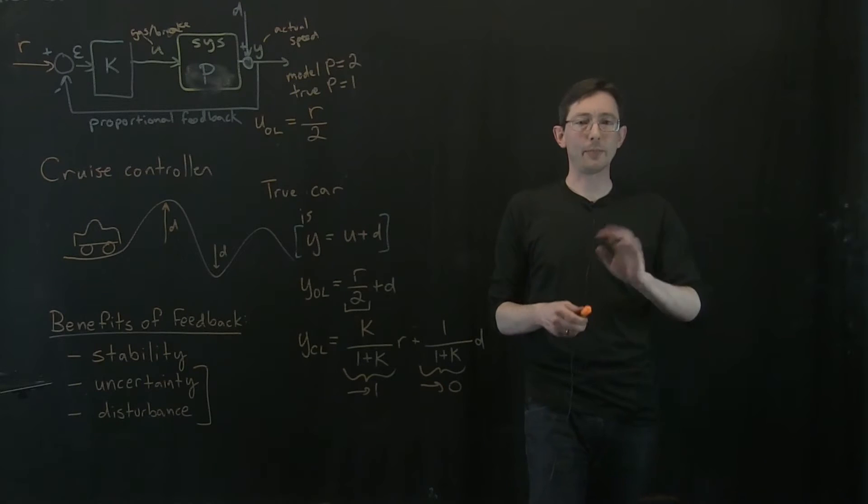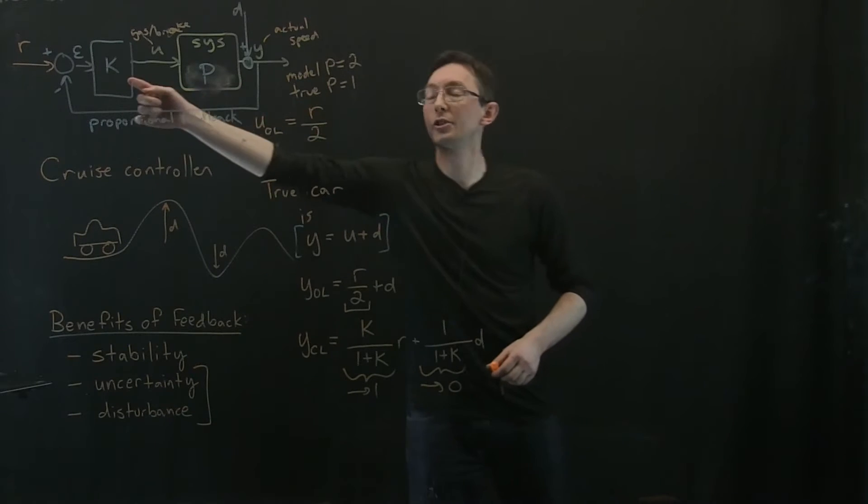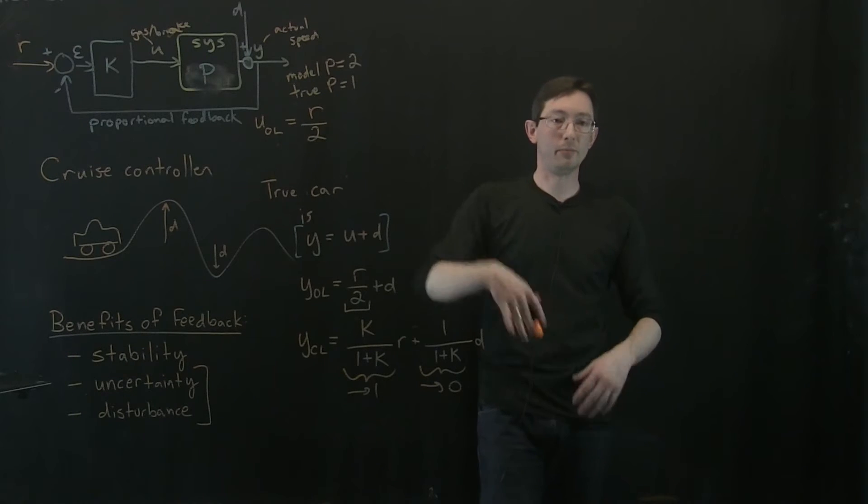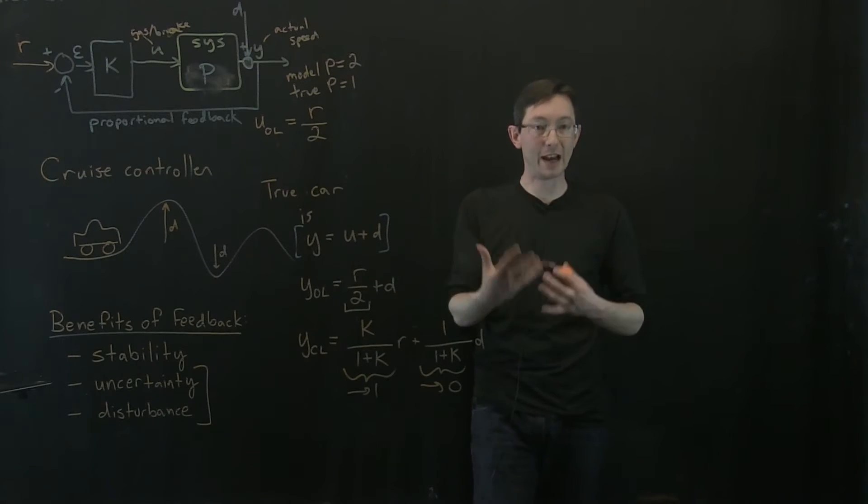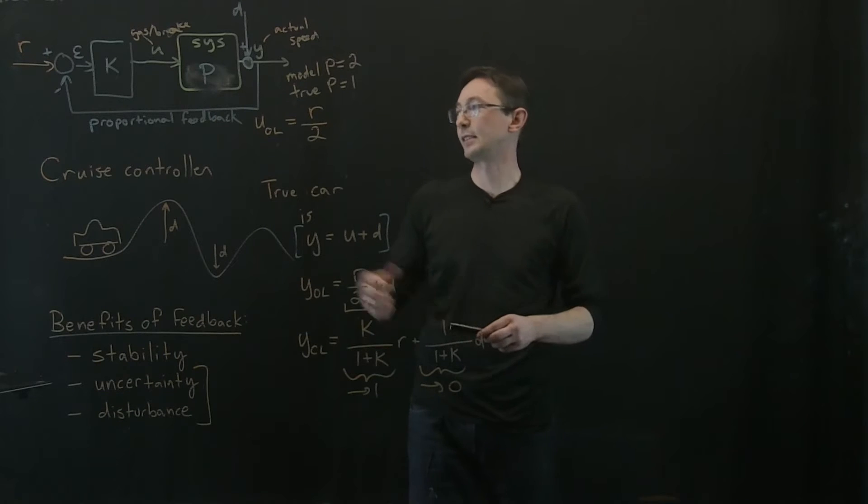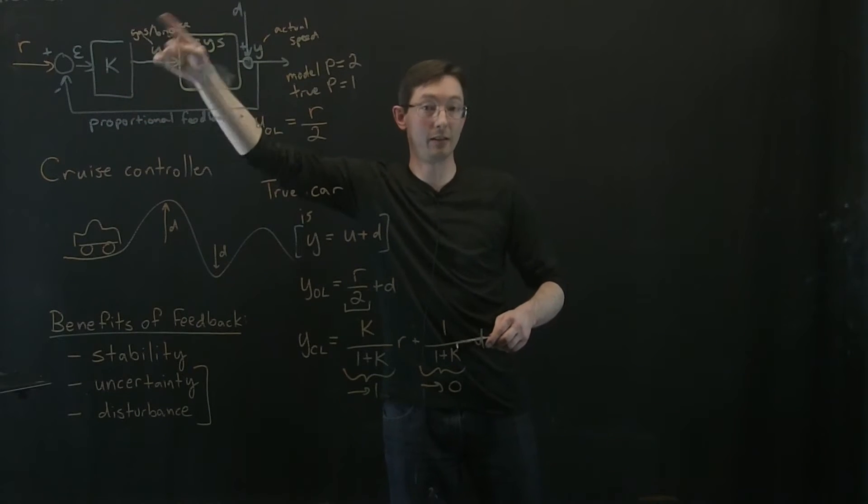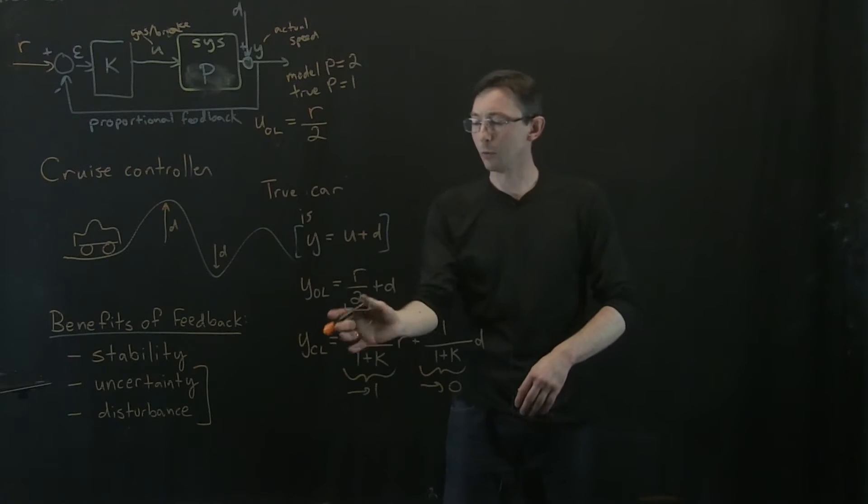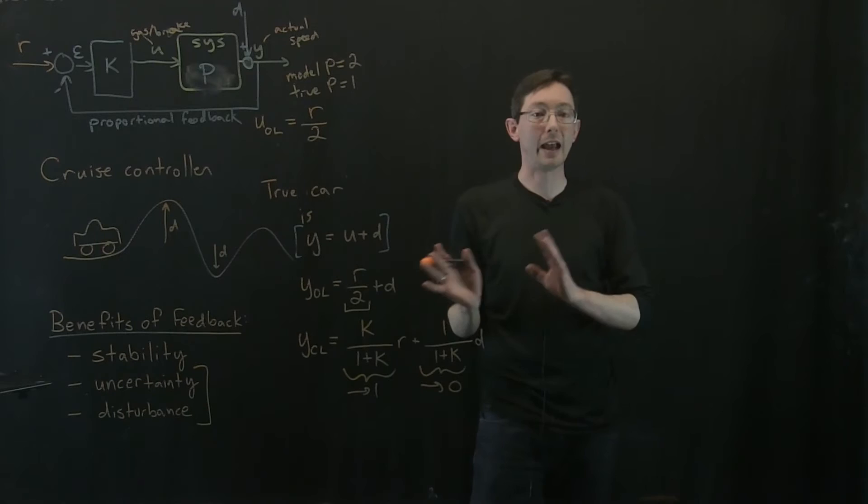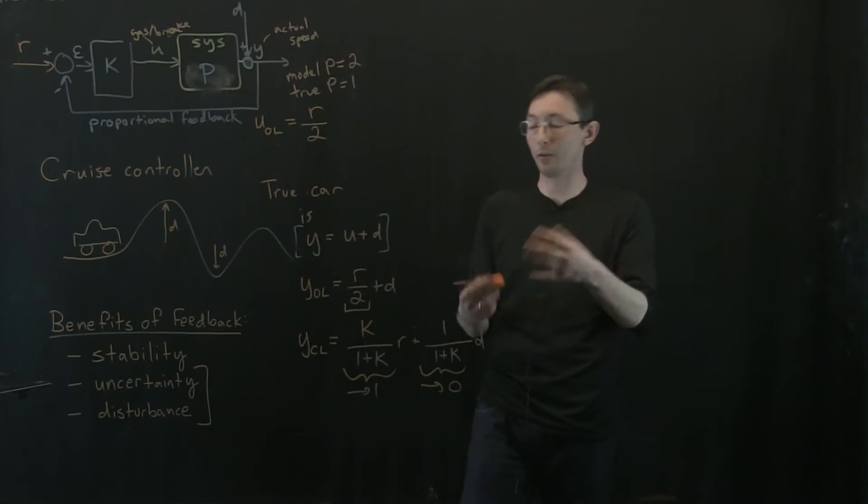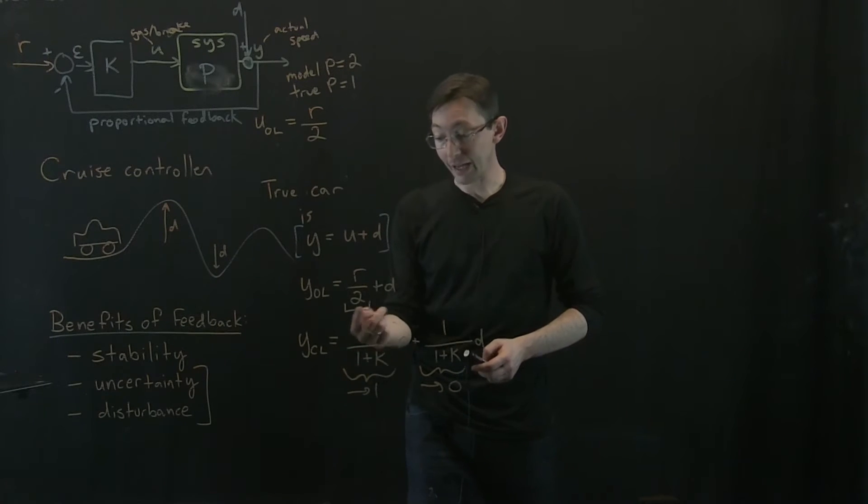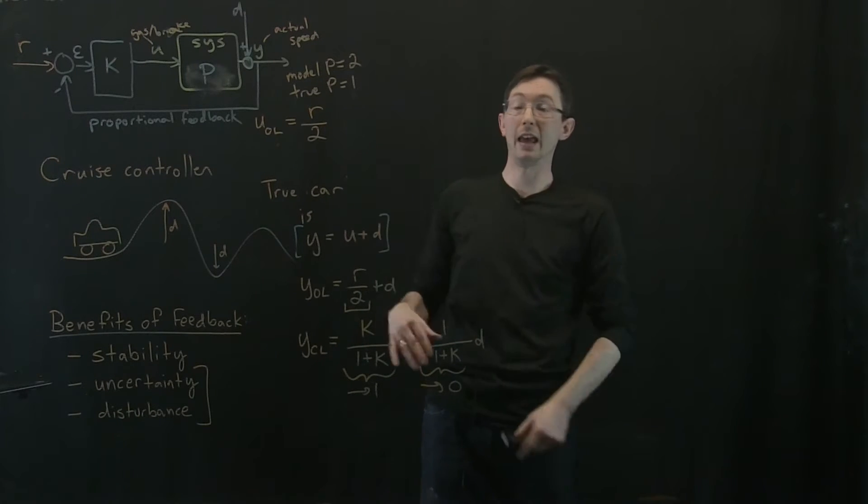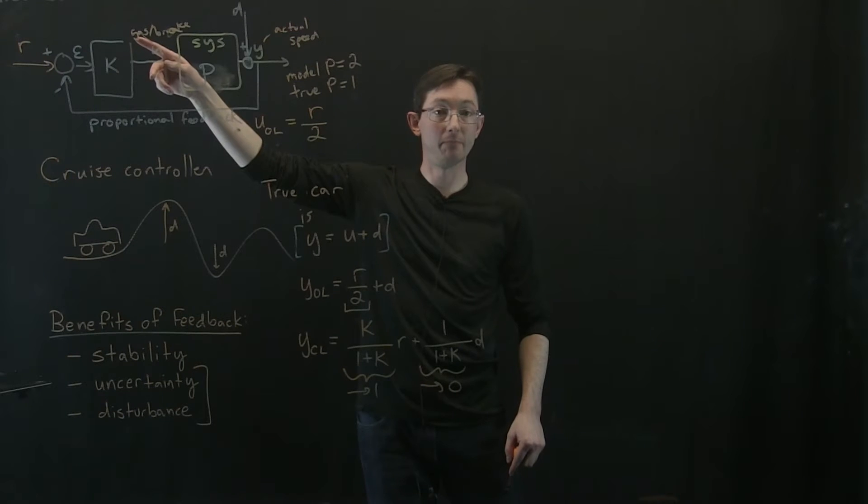Now, in a lot of applications, there's a limit to how large k can be. Maybe I'm not driving a Ferrari. Maybe I can't just instantly bump up the RPMs. Maybe there's some dynamics involved. Maybe I'm driving a Civic and there's actually kind of a lag between when I hit the gas and when the car gets going. So we'll add in dynamics later and we'll add in limits on how big k can be later. But for now, I get better reference tracking and better disturbance rejection if I have a big gain k in this proportional feedback scheme.